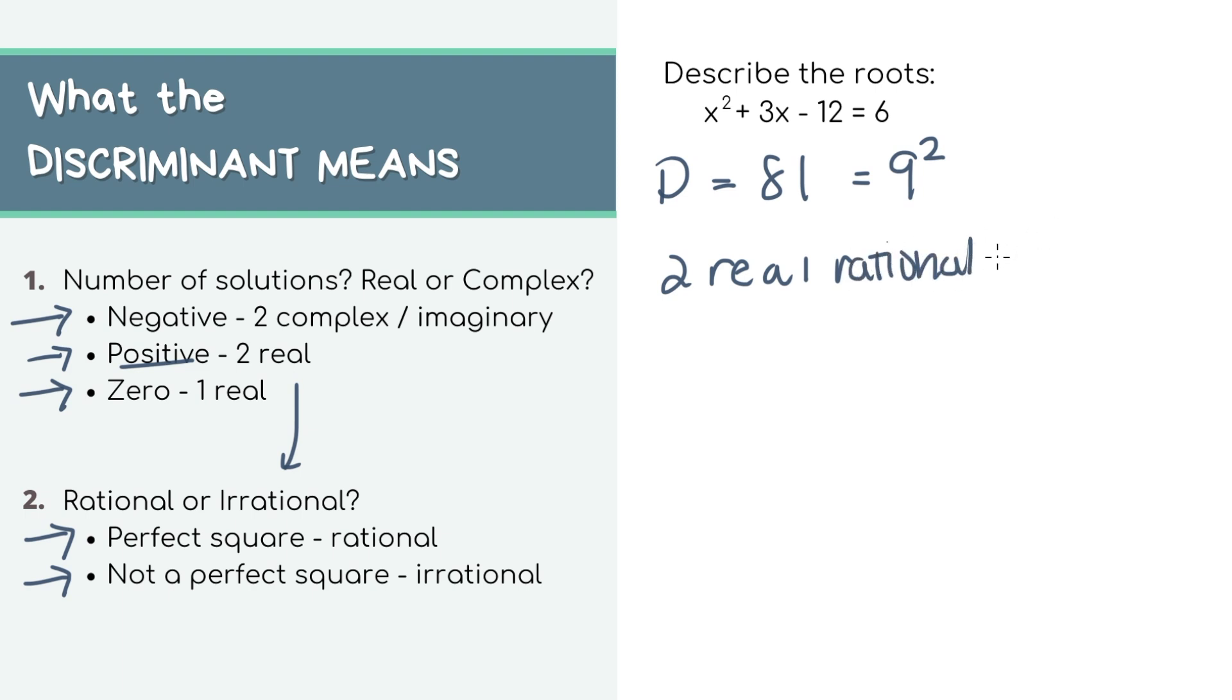Just to summarize, because our discriminant is positive 81, we have two real rational solutions for this equation.